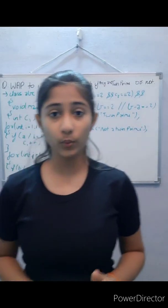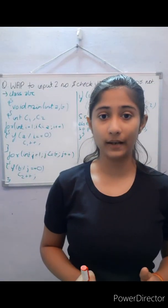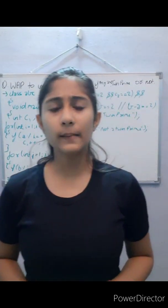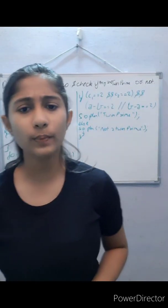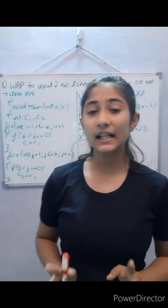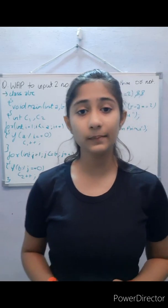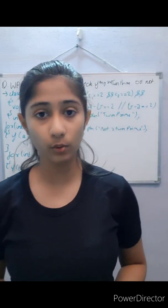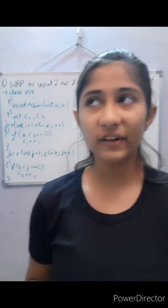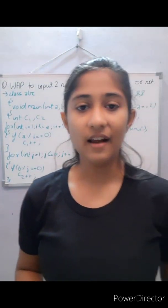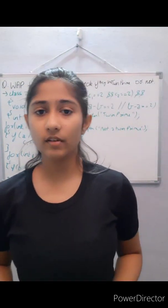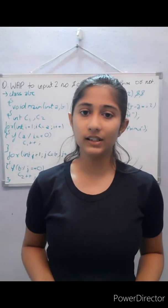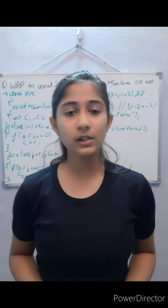Firstly we should know what a twin prime is. Twin primes are basically two prime numbers that have a difference of two between them. For example, five and seven — both are prime numbers and the difference between them is equal to two.